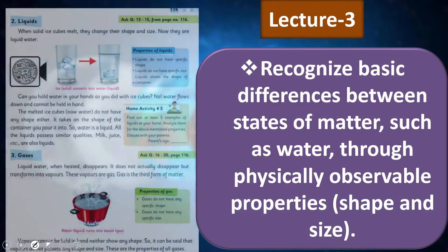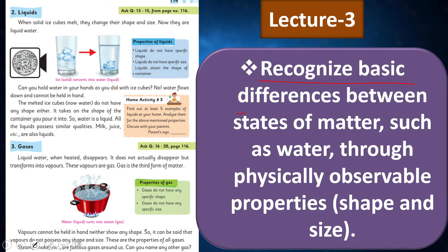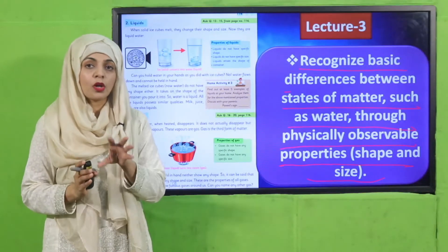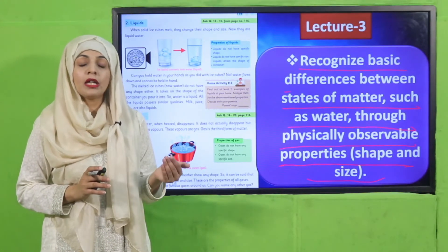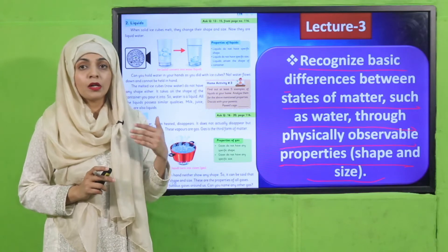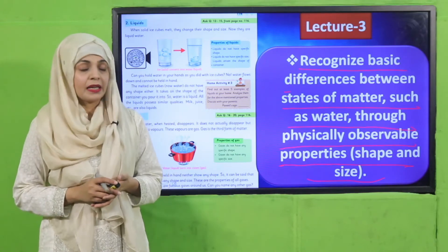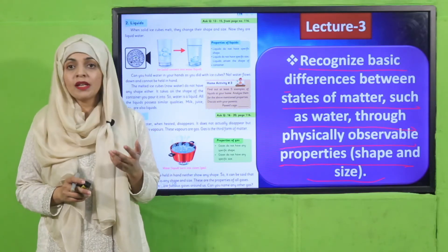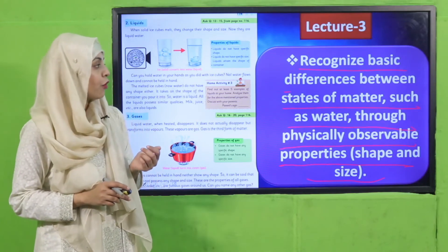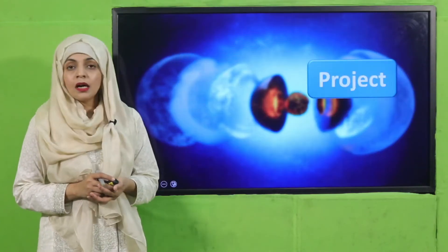So the students will be able to recognize basic differences between the states of matter, such as water, through physically observable properties - shape and size. Just like in Lecture number 2, we learned about the three states - solid, liquid, and gas. We discussed solid, and now in Lecture number 3, we will explain liquid and gas. The reading page that is involved is page number 140.